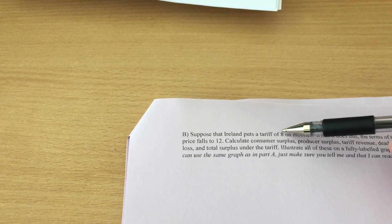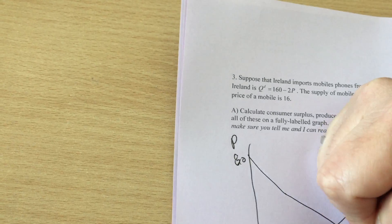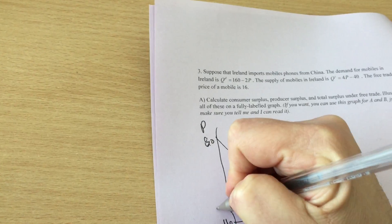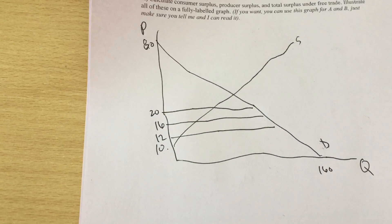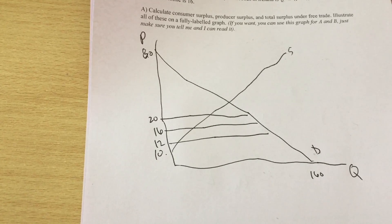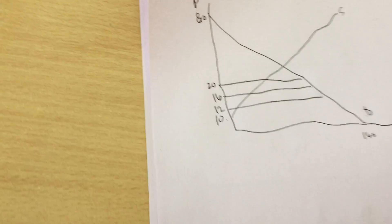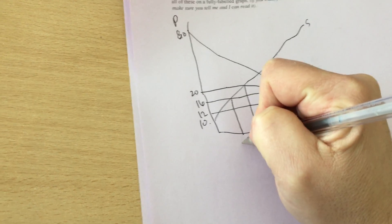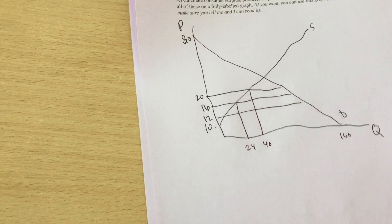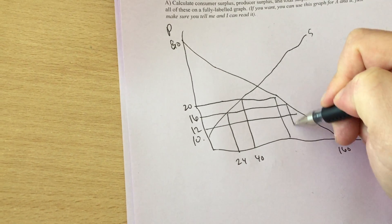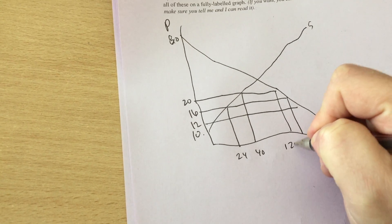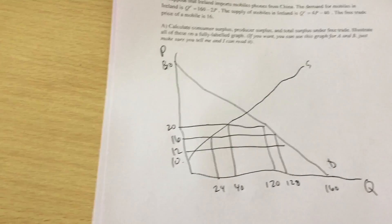When we add on a tariff of 8 the price in our country falls to 12. So the terms of trade price we go down to 12 and that is going to drive the price in our country up the tariff of 8 plus the original price of 12. So under free trade we produce 24, under the tariff we produce 40. Under free trade we consume 128 and under the tariff we consume 120.